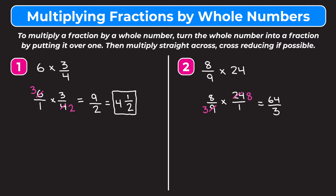Now we change 64 thirds into a mixed number. Three goes into 64 twenty-one times; 21 times three is 63, so we have one left over. Our answer is 21 and one-third.